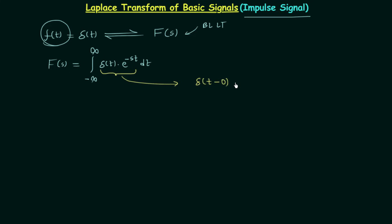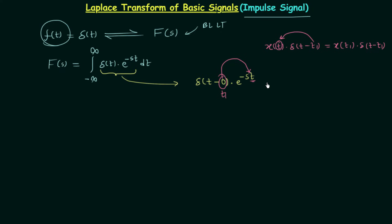We can write δ(t) as δ(t − 0), multiplied by e^(−st). Using the sifting property of the impulse signal: if we have x(t)·δ(t − t₁), then t is replaced by t₁, giving x(t₁)·δ(t − t₁). Here t₁ = 0, so we substitute 0, giving δ(t − 0) multiplied by e^(0), and since e^0 = 1, we finally have δ(t).